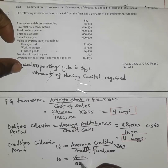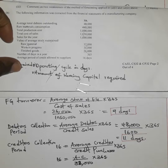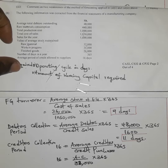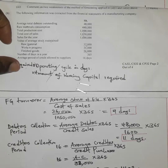Using the creditors formula: 16 × 32,000 ÷ 365, the average creditors value works out to 1,402. This represents the current liability — the creditors figure we will use in the working capital calculation.